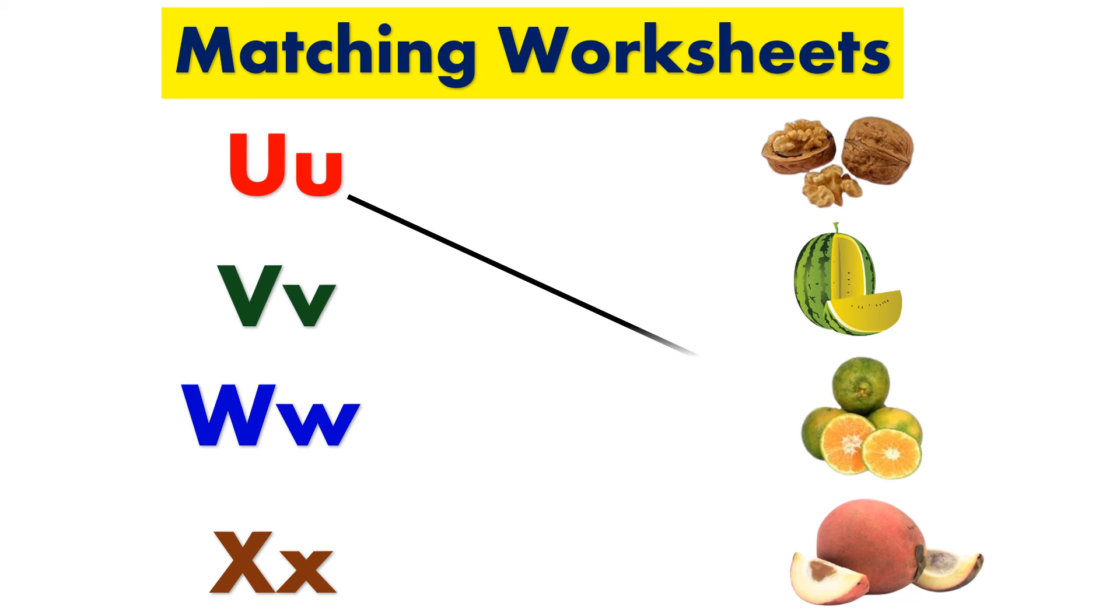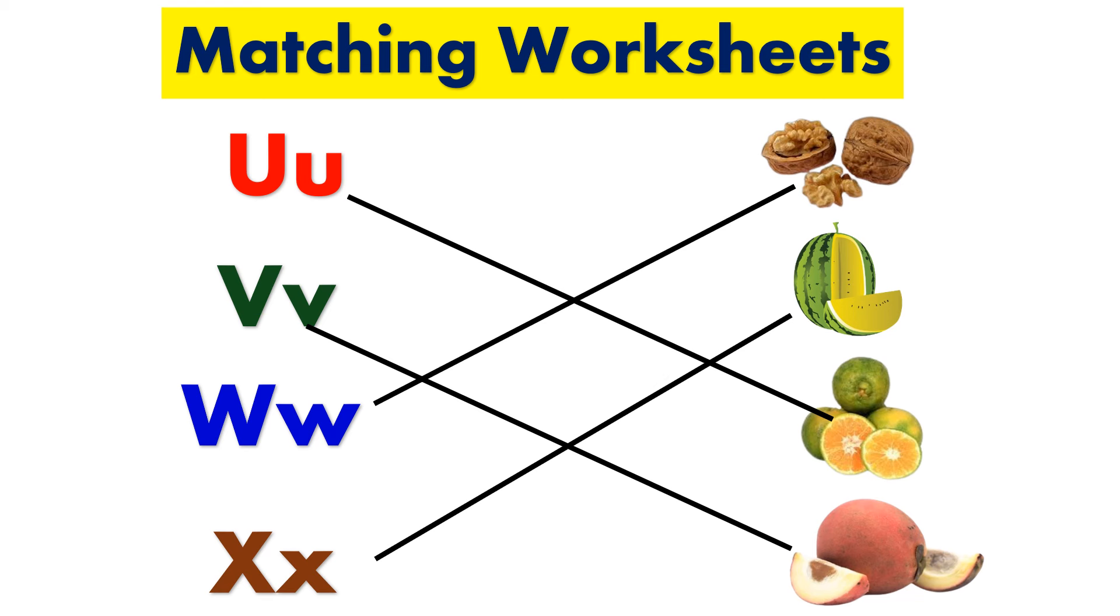U for ugly fruit, V for velvet apple, W for walnut, X for xigua.